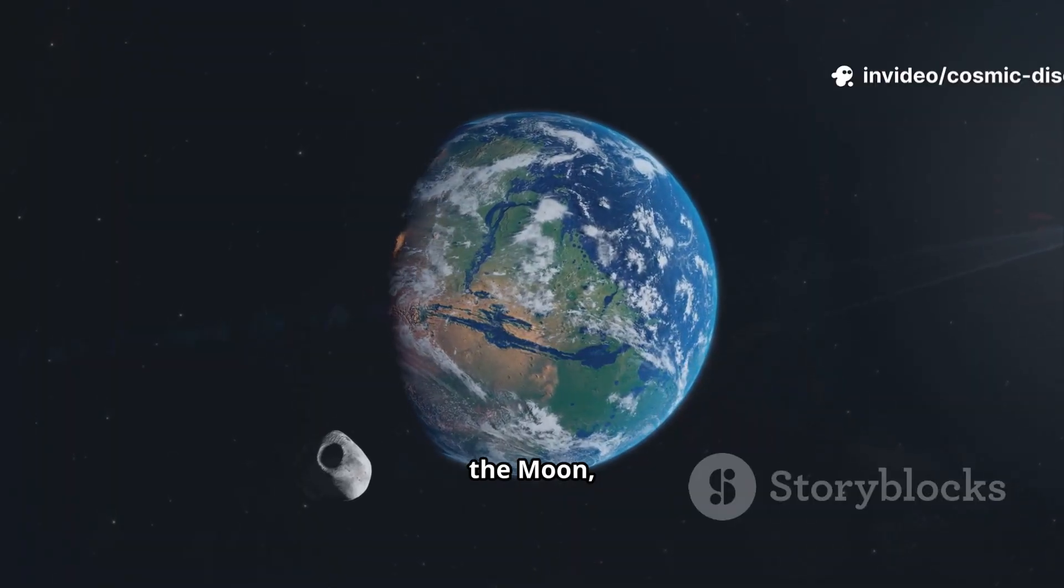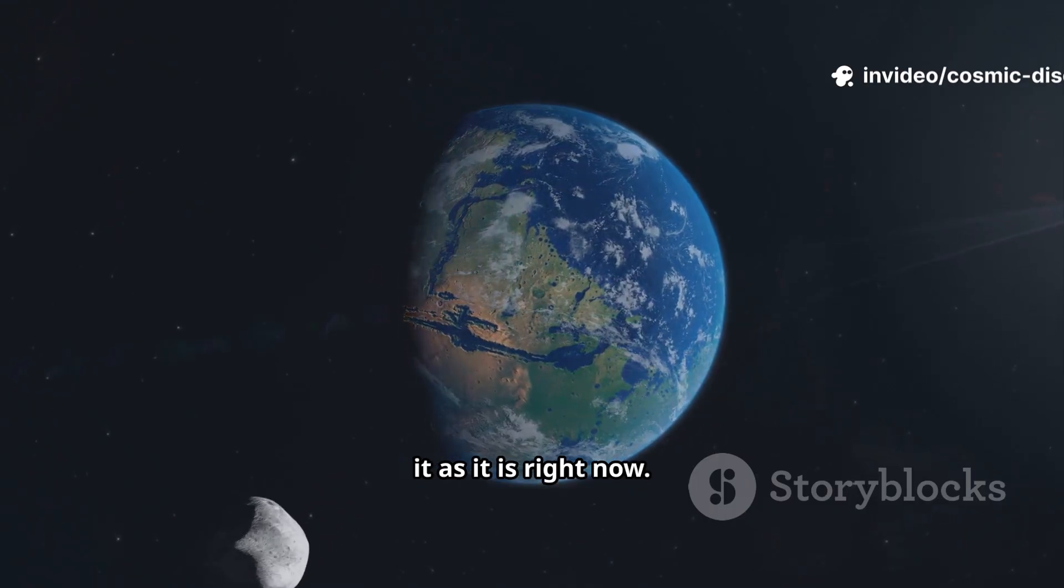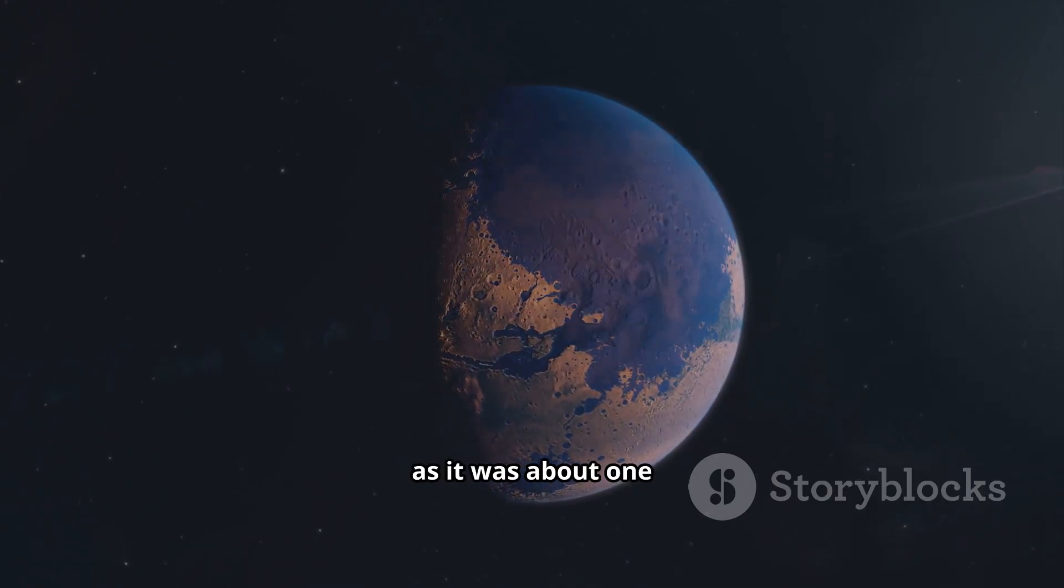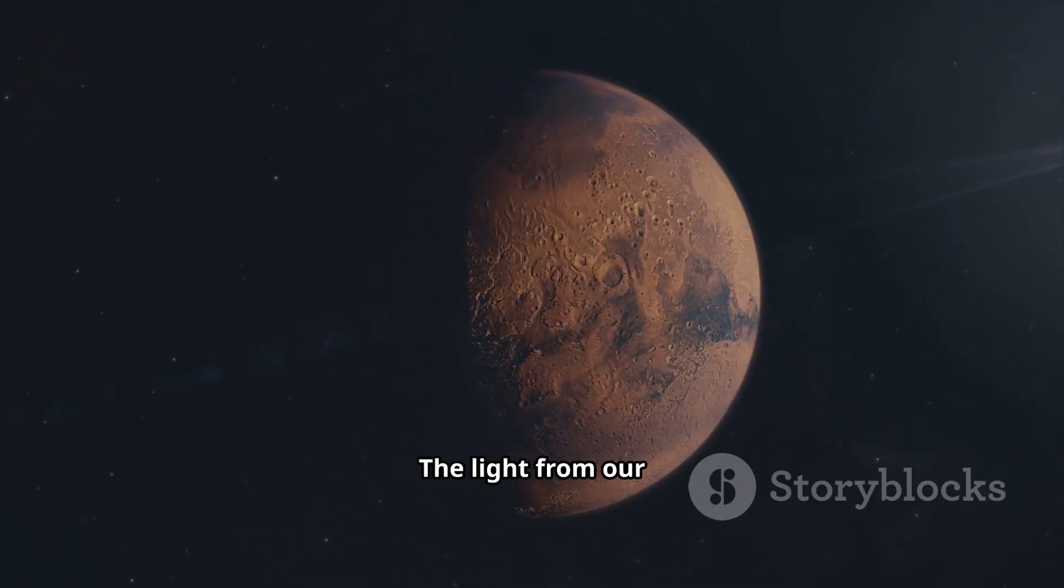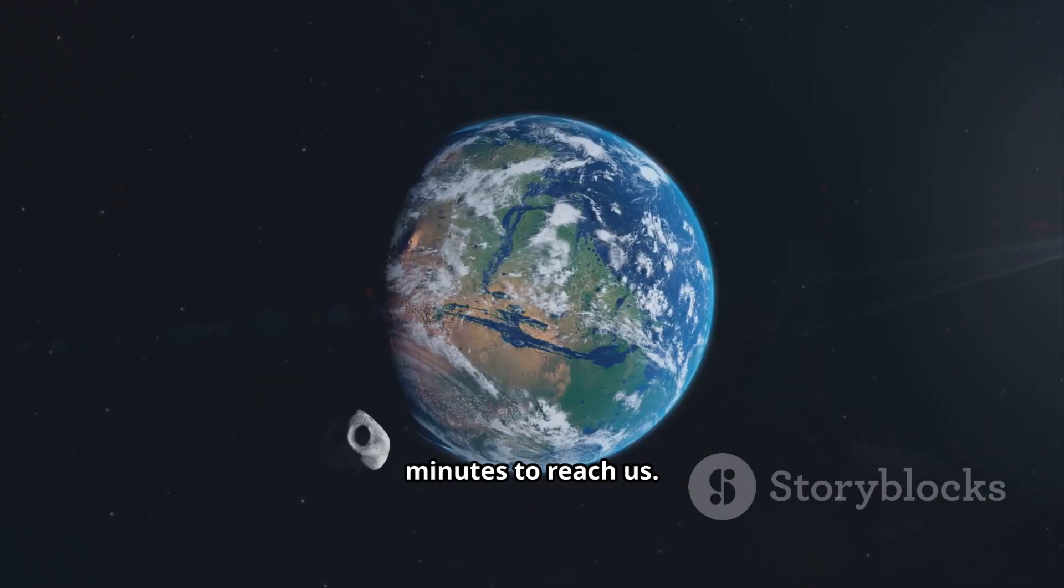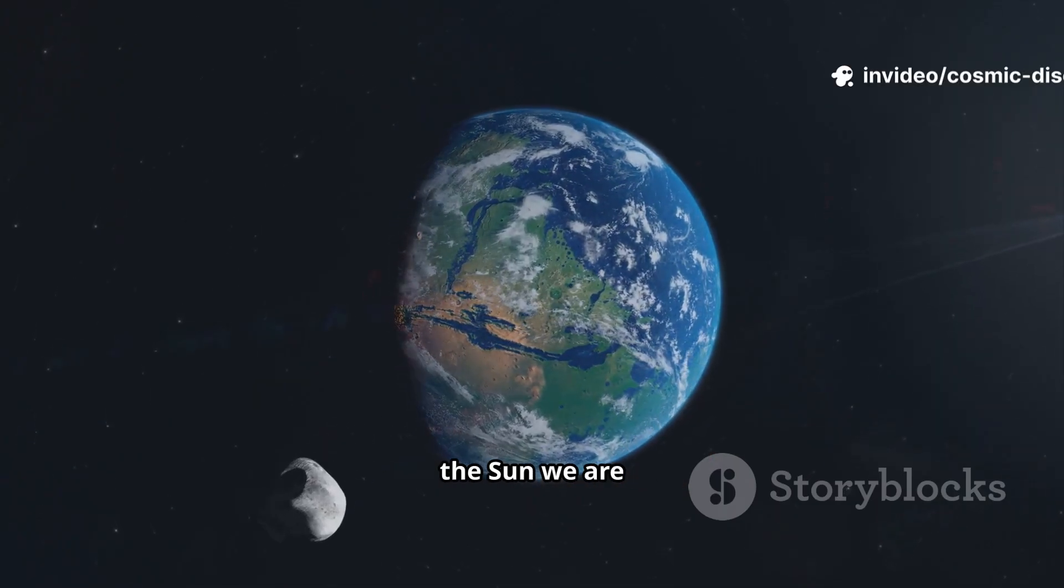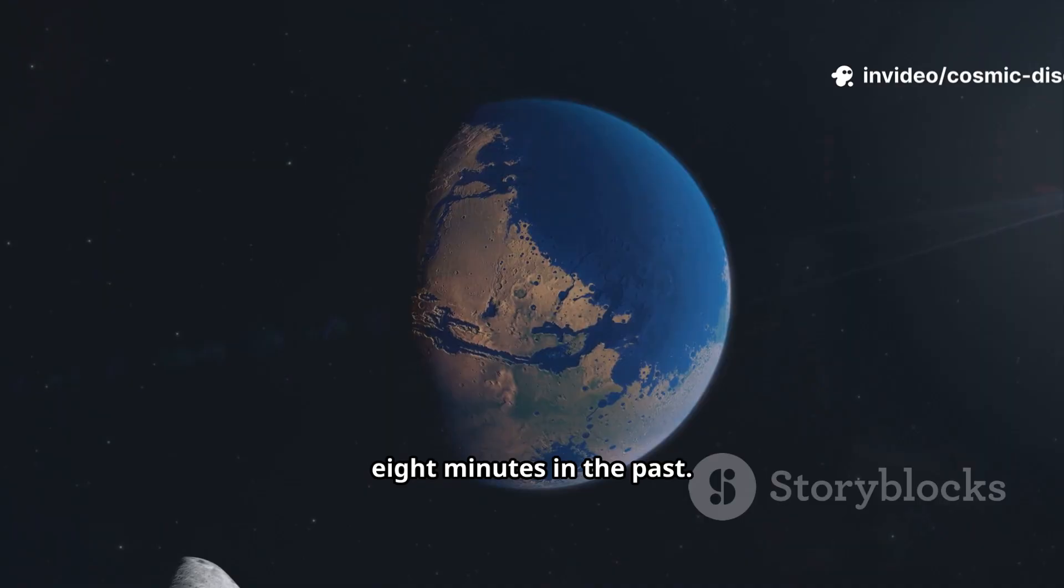When you look up at the moon, you are not seeing it as it is right now. You are seeing it as it was about one second ago. The light from our sun takes eight minutes to reach us. So when we look at the sun, we are seeing it as it was eight minutes in the past.